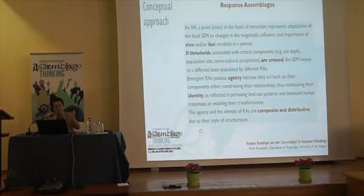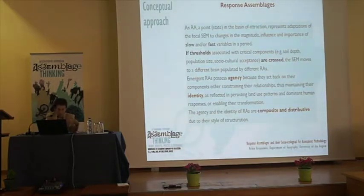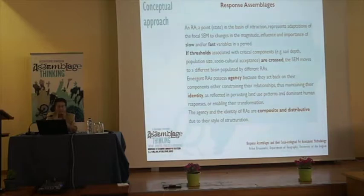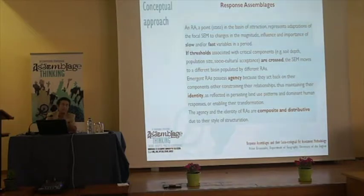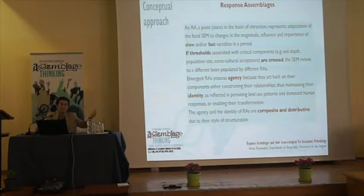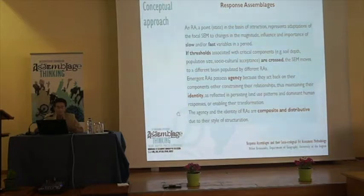This is a schematic presentation of a basin of attraction adapted from Walker, a well-known researcher in resilience thinking, which shows its characteristic geometry: the latitude — the width of the basin — its resistance, precariousness, and panarchy, which shows the difficulty with which the system can change. Precariousness shows how close the assemblage is to a critical threshold. A response assemblage represents adaptations of the focal milieu to changing magnitude and influence of slow and fast variables — some very slow, like calcium, some very fast, like prices or temperatures.